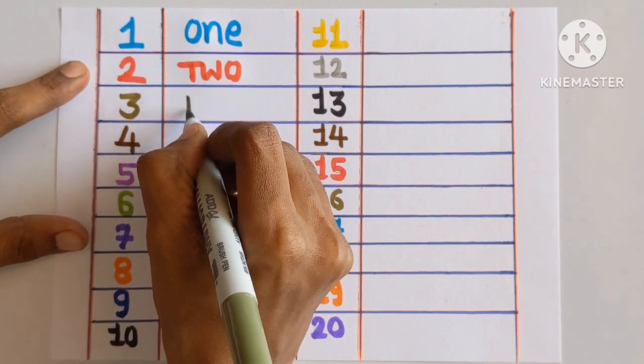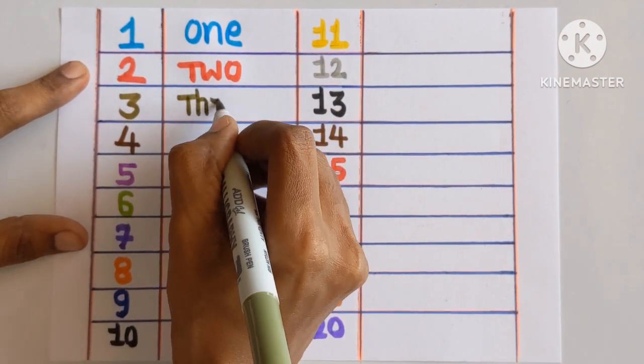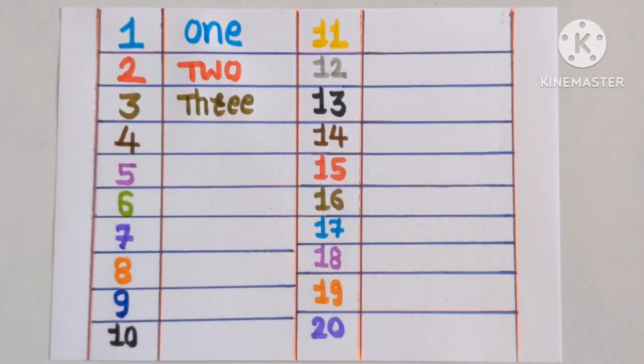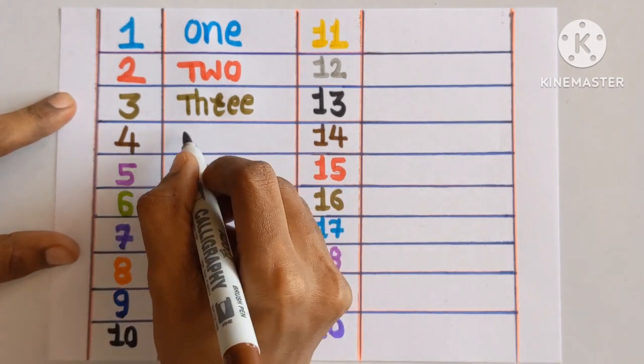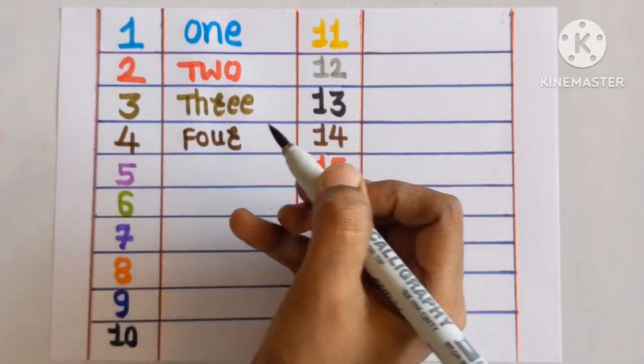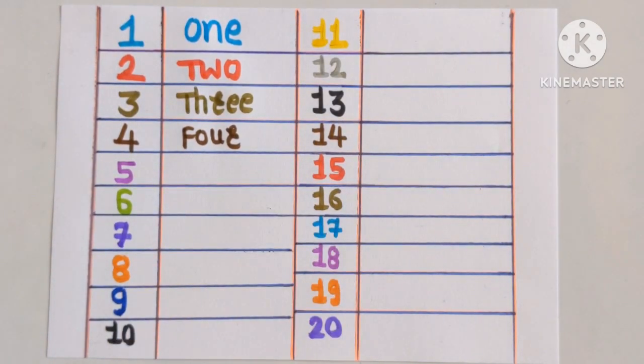Number 3: T-H-R-E. Three. Olive green color. Number 4: F-O-U-R. Four. Brown color.